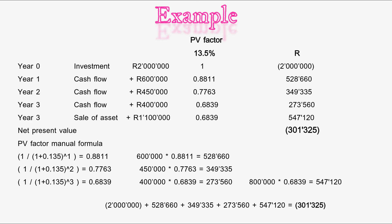As you can see, I've repeated this for year two and year three — except for year two we raise to the power of two, and for year three to the power of three. The disposal value of eight hundred thousand rand is also multiplied by the year three factor, zero point six eight three nine (which is one divided by one point one three five to the power of three), because the disposal amount also falls within year three. That gives a disposal present value of five hundred and forty seven thousand, one hundred and twenty rand.